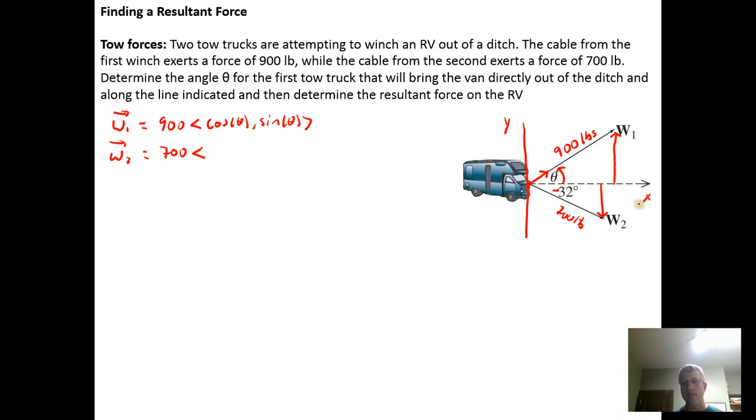And that means that winch two has a tension of 700 pounds in it or force of 700 pounds being applied. And we know the angle it's making with the positive X axis. So we're going to put cosine of negative 32 degrees, comma, sine of negative 32 degrees.